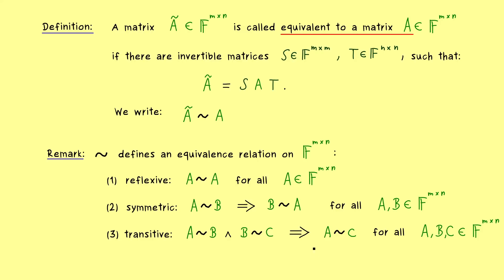Please don't forget that an equivalence relation always implies that we can partition the set into equivalence classes. In this video we have learned that two matrices in different equivalence classes cannot represent the same linear map. In the next video I'll show you how we can characterize these equivalence classes — we have already seen the simple ingredient that tells us if two matrices are equivalent. I really hope to see you there. Have a nice day. Bye bye.